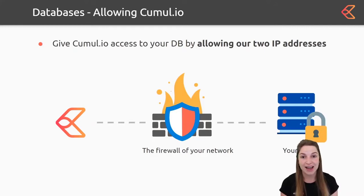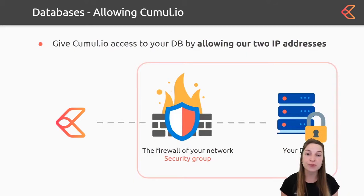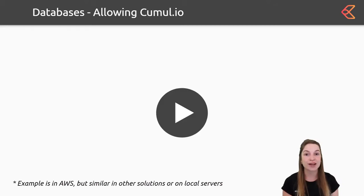Also know that if you want to connect a database, you need to give Cumulio access to your data. You can do this by allowing our two IP addresses on the firewall of your network. You also need to allow your database to accept external queries so that Cumulio can get the data. Some people also use security groups and simply allow our IP addresses at the security group level. For illustration, we have a small video showing these two steps. Note that in the example we use AWS, but it's the same for other solutions or local servers as well.